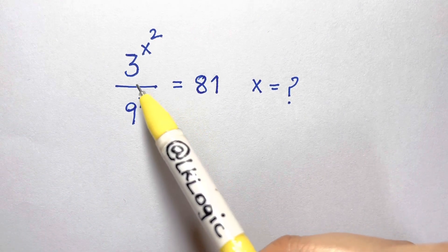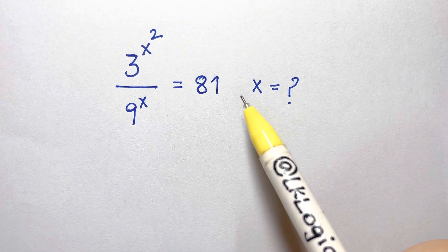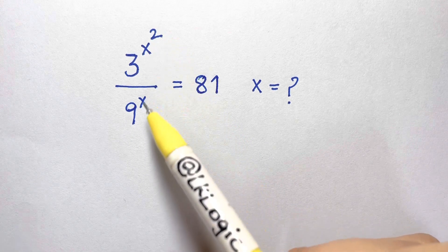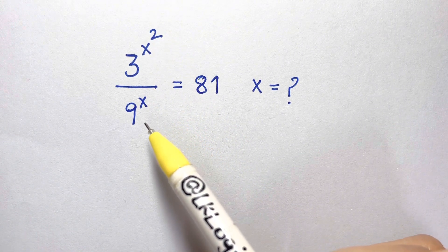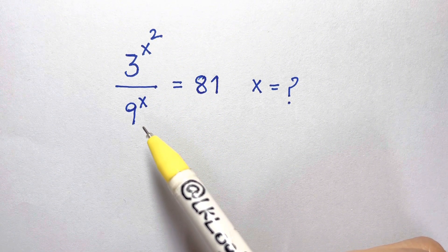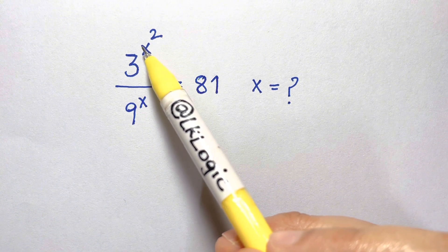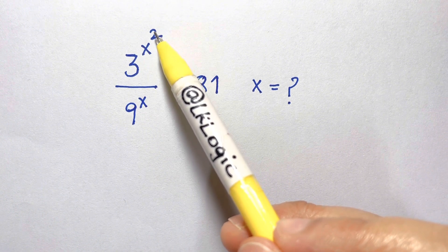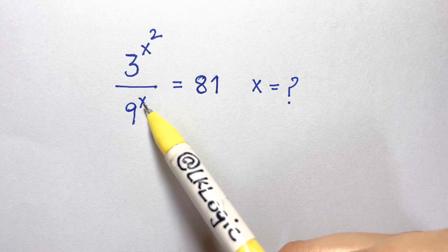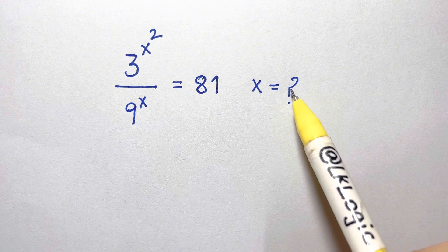Hi everyone, we have a very nice exponential equation to solve. If you can solve it, pause the video, solve it for yourself, and then come back to check the answers. Here we have 3 to the power of x squared over 9 to the power of x equals 81. What is the value of x?